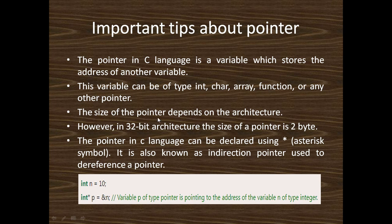The size of the pointer depends on the architecture. However, in 32-bit architecture the size of the pointer is 2 bytes. The pointer in C language can be declared using the star or asterisk symbol. It is also known as the indirection pointer, used to dereference a pointer.